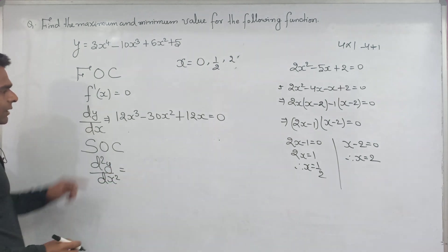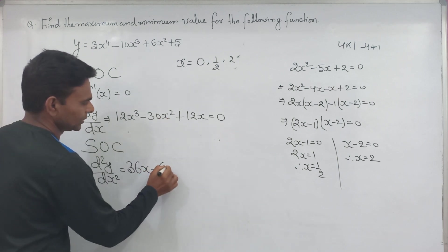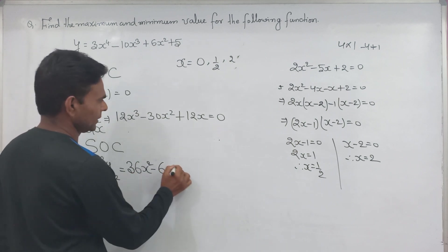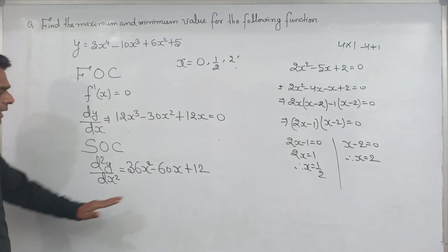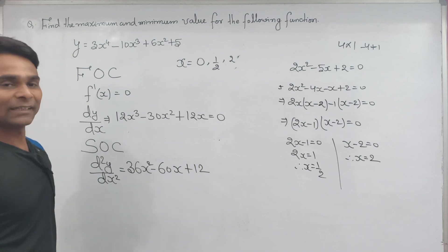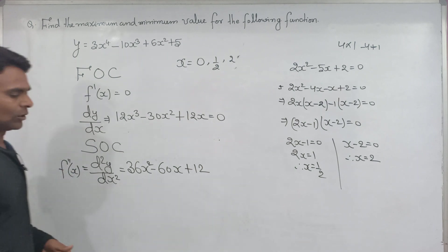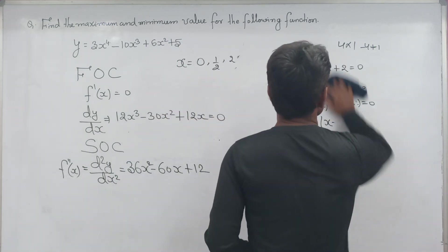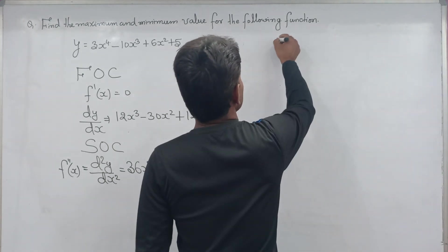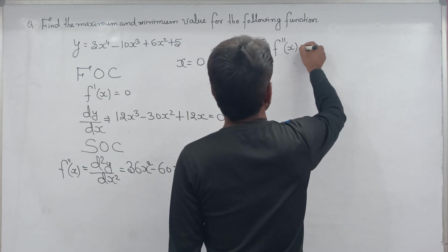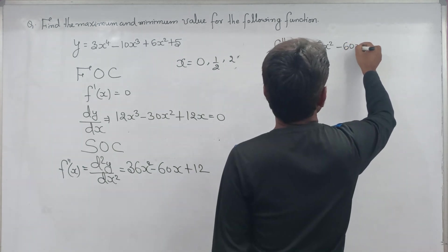Now to check whether these are minimum or maximum values, we check the second derivative. The second derivative f double dash of x is equal to 36x square minus 60x plus 12.